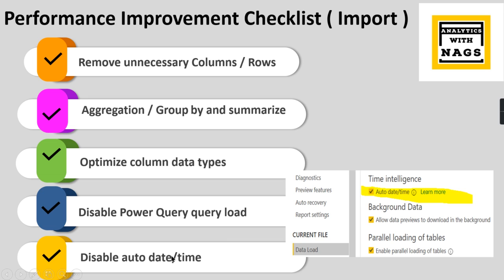One last thing you can do is disable auto date and time. A lot of people don't do it, but it will drastically improve performance. By default, Power BI creates an internal temporary date table for each date column in your tables — so if you have three or four date columns in a table, it creates a separate hidden table for each one. This leads to huge storage usage with large data volumes. You can disable that option, but you need to have a proper date dimension to make your time intelligence functions work correctly. Just disable the auto date/time option in the settings.